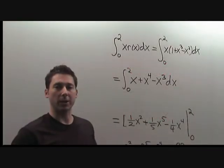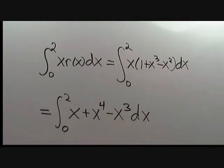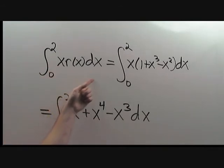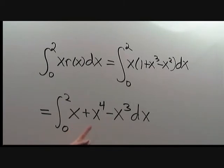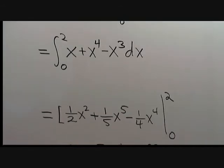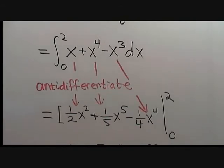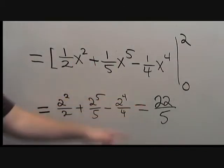Let's compute each integral separately and then put our answers together to get the center of mass. The first integral is the integral from 0 to 2 of x·ρ dx. Since ρ = 1 + x³ − x², we need to compute the integral from 0 to 2 of x + x⁴ − x³ dx. Anti-differentiating term by term and evaluating from x = 0 to x = 2 gives 22/5 as our answer for this integral.